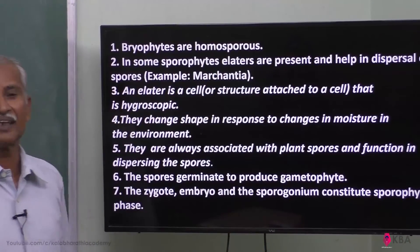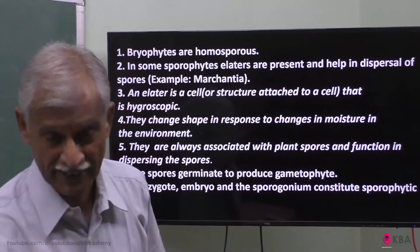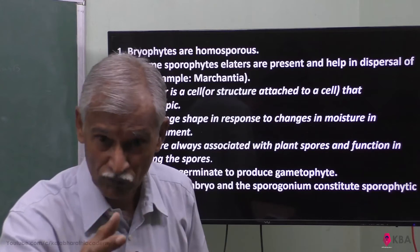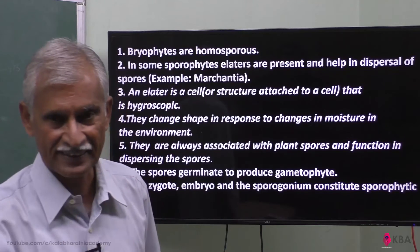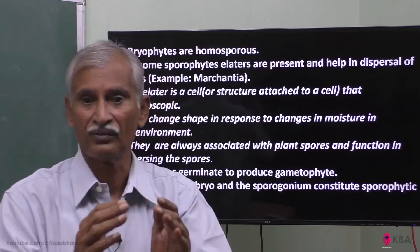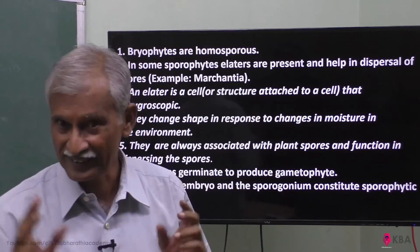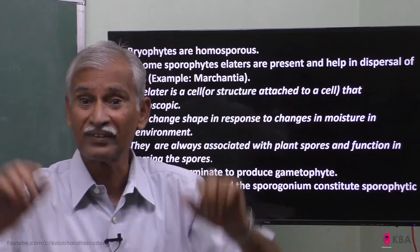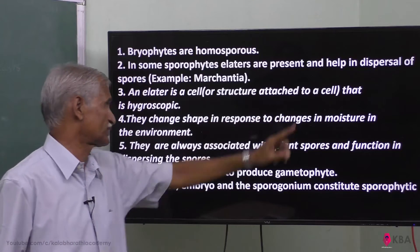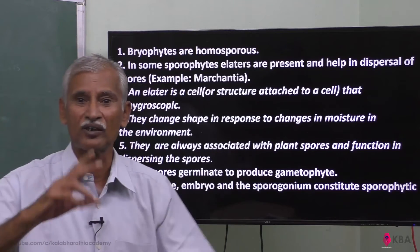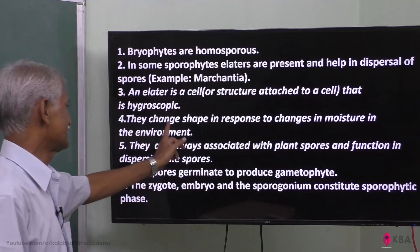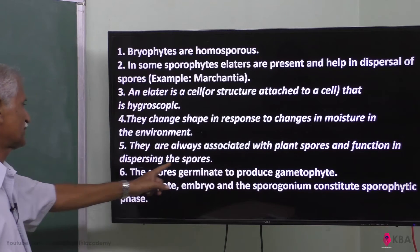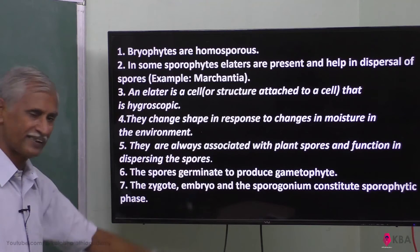In sporophytes, elaters are present. Elaters are hygroscopic structures — cells that change shape in response to changes in moisture in the environment. They get elongated or contract with moisture changes. Their main function is to assist in dispersing the spores. They are always associated with plant spores in the sporophytic phase.